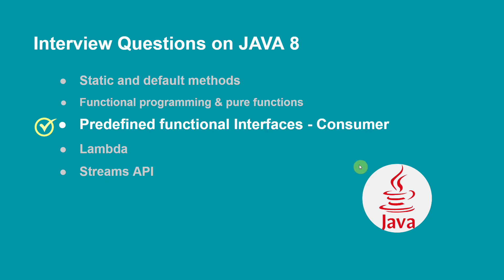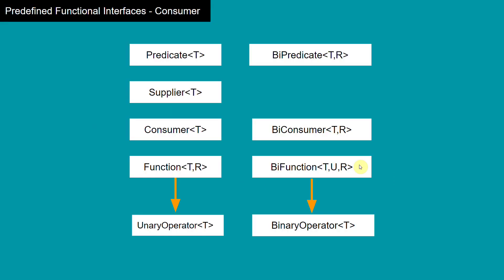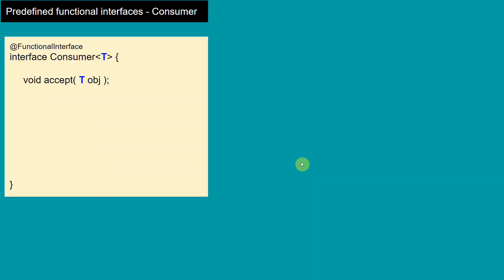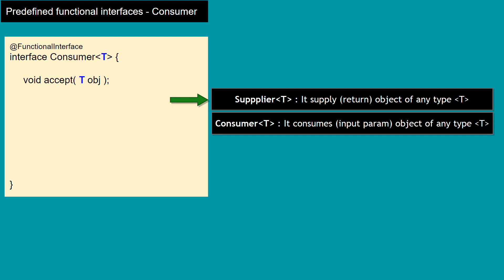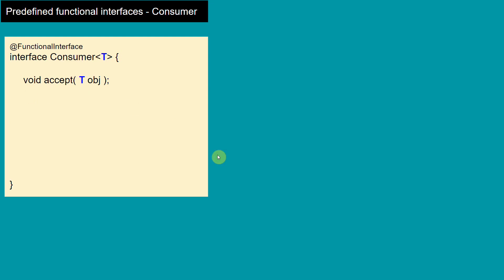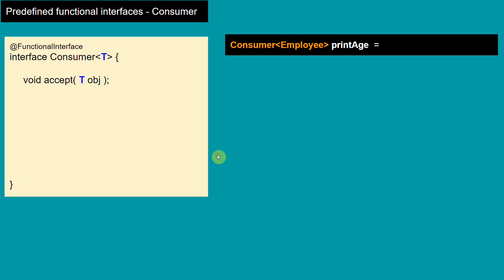We are going through predefined functional interfaces and in this video we are going to see our third predefined functional interface which is Consumer. In Consumer we have only one abstract method and this method accepts an input argument but it does not return anything — it returns void. In our last video we saw Supplier, which does not accept anything, it just supplies a return object. Opposite to Supplier, Consumer does not return anything, it just consumes.